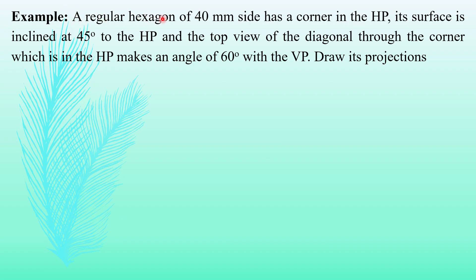The question mentions a regular hexagon of 40mm side has a corner in HP, its surface is inclined at 45 degrees to the HP, and the top view of the diagonal through the corner which is in HP makes an angle of 60 degrees with VP. Draw its projections. Let us take out the given data first. In the first sentence, the regular hexagon is given with side 40mm. Next, we can name this hexagon for our convenience as ABCDEF.